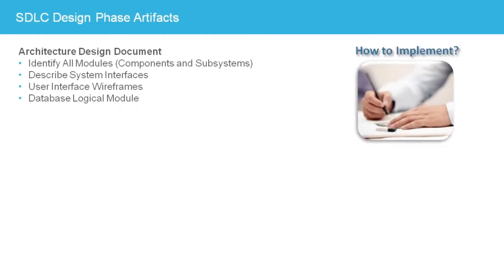The design phase activities result in artifacts that are used in the development phase to implement the final system. The architecture, or high-level design document, gives a blueprint of the entire system which will be built. It will include the software architecture, which specifies the modules and the interfaces between them and external systems, as well as communication methods. The user interface flow will be described with the wireframe screens, and the logical database model will also be included, showing entities and their relationships. The architecture document will include many diagrams, such as UML system diagrams and database entity relationship diagrams.